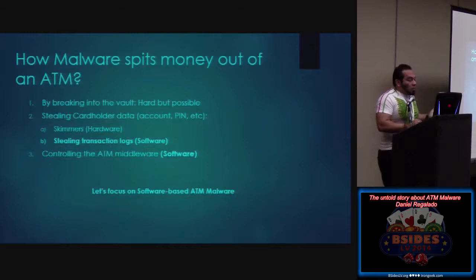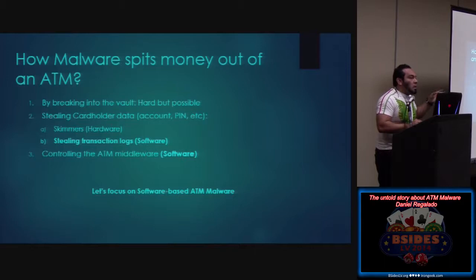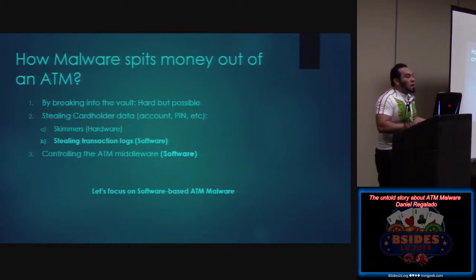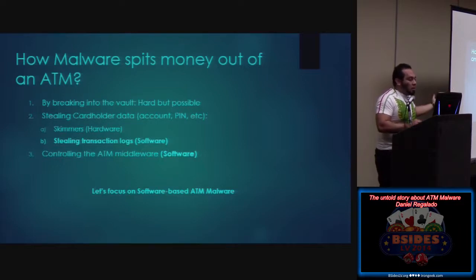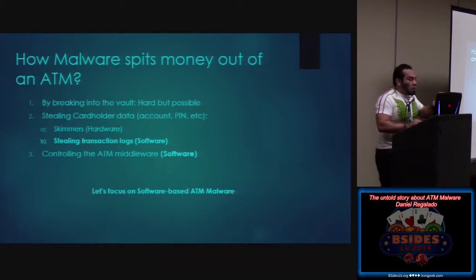How does the malware get money? Options include: breaking into the vault (hard but possible), stealing cardholder information to clone a debit card and withdraw money — the victim won't realize money is being lost until something appears on their account. At that point they report to the bank and probably get reimbursed, but the criminals already have that money from the ATM transaction logs. The other approach is controlling the ATM middleware, which we'll discuss — Bluetooth is one example of that.